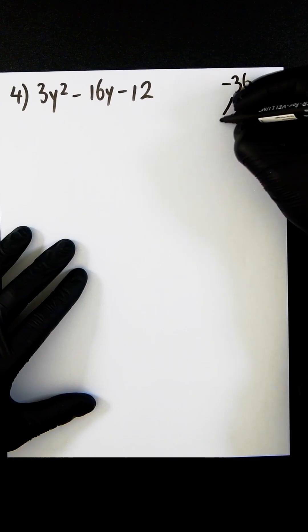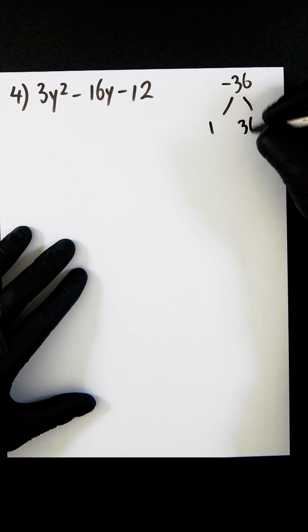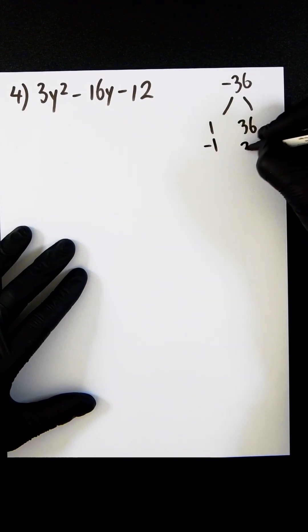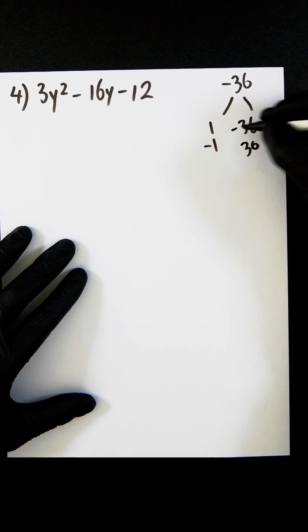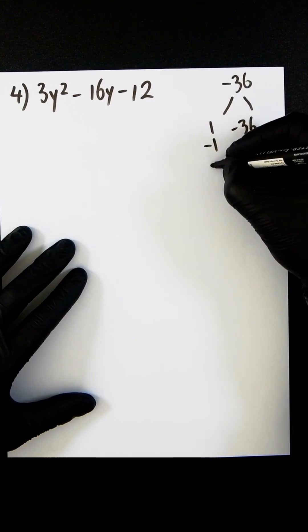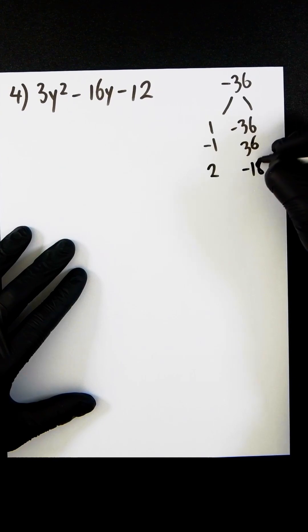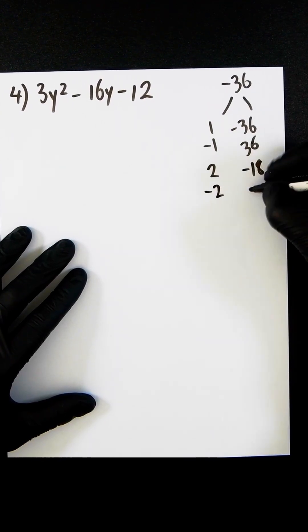Now we can write down all the factor pairs of minus 36: 1 and minus 36, minus 1 and 36, 2 and minus 18, and minus 2 and 18.